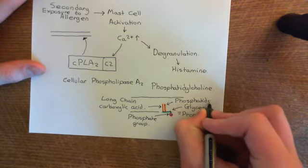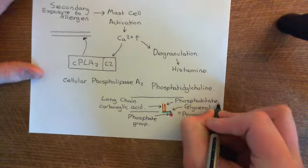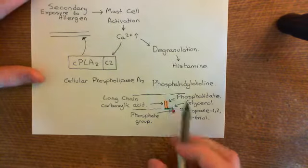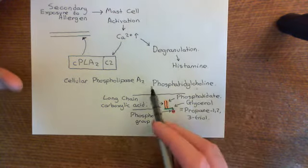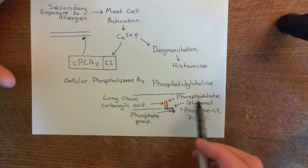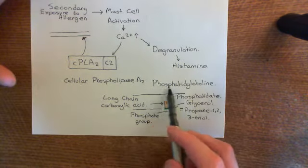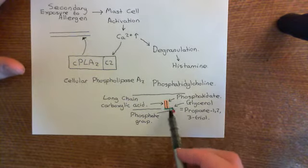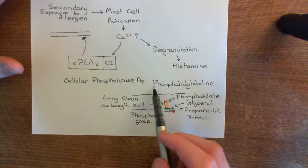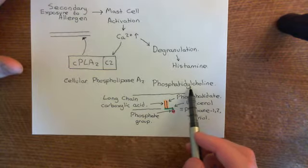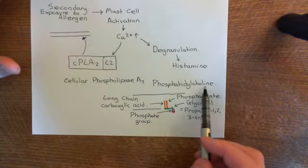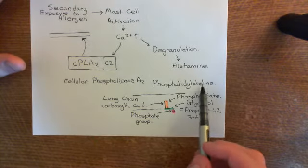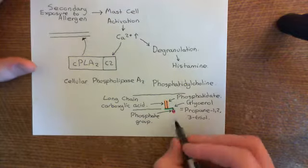Although no one would call a phospholipid a phosphatidate molecule now, when talking about modified phospholipids, everyone still uses 'phosphatidate.' The 'phosphatidyl' here means a normal phospholipid molecule. Phosphatidylcholine basically means one of these with a choline molecule stuck onto it.